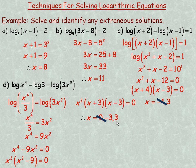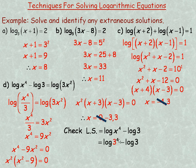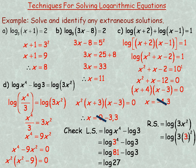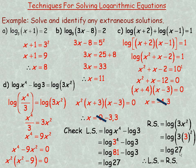Checking x equals 3 on the left side: 3 to the fourth is 81, and the logarithm of 81 divided by 3 is the logarithm of 27. On the right side, 3 times 3 squared is 3 times 9 equals 27, so we also get the logarithm of 27. The left and right sides are equal. For x equals negative 3, negative 3 to the fourth is still 81, and negative 3 squared is still 9, so the check works identically.